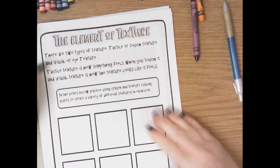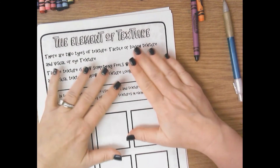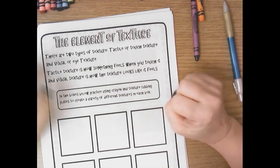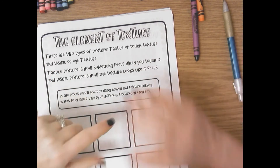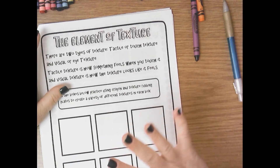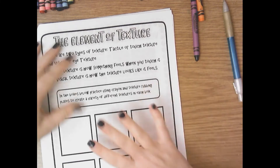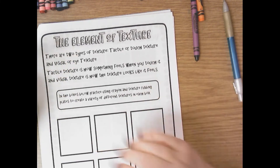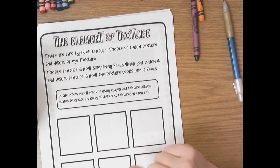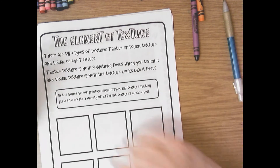The element of texture: there are two types. Tactile texture, or touch texture, is texture you can feel — like petting a dog or cat and feeling the soft fur. Visual, or eye texture, is texture you can see but not touch. If we create texture on paper it will be more visual texture, because when you touch the paper it's smooth. We're going to create visual texture using texture rubbing plates, which have actual tactile texture.